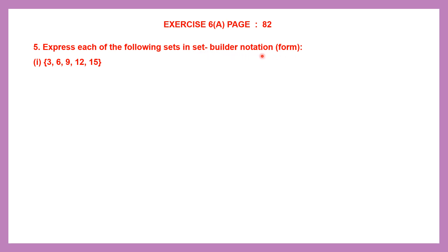Now, what is the set builder notation? If you look at this question, can you see that all the elements are already given to us within curly brackets? This method is the roster method. Now, if you have to express this in the set builder notation, we will not write the actual elements. Instead, we will write a short statement or a formula to help us understand what the elements are. So the direct elements are not given, but in an indirect way, we are told what the elements are.